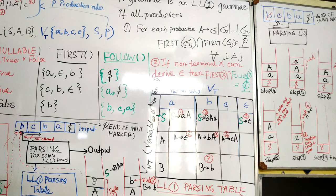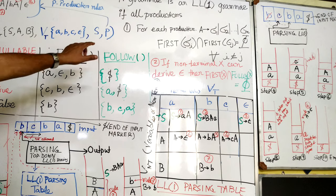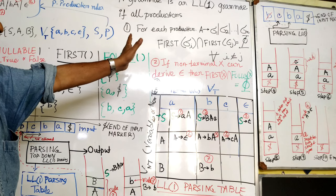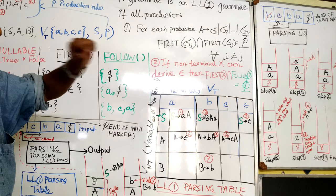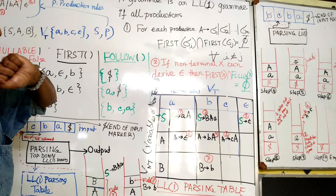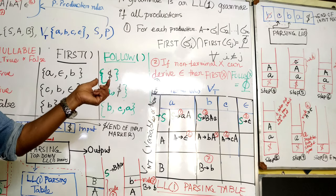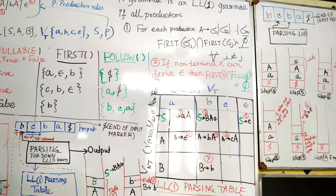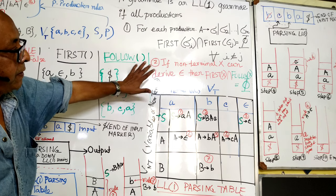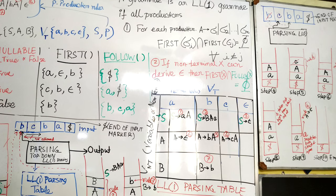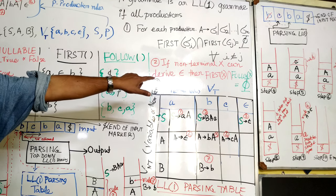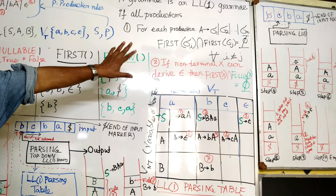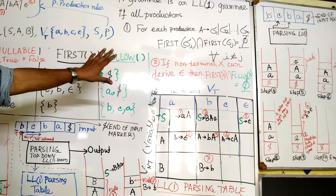First we have to check whether this is a top-down grammar or not. For each production, any variable to any string, we have to compute the first of all and see that it will be disjoint. From the same variable we cannot get two rules, then we have backtracking. Backtracking in predictive parsing is not allowed.